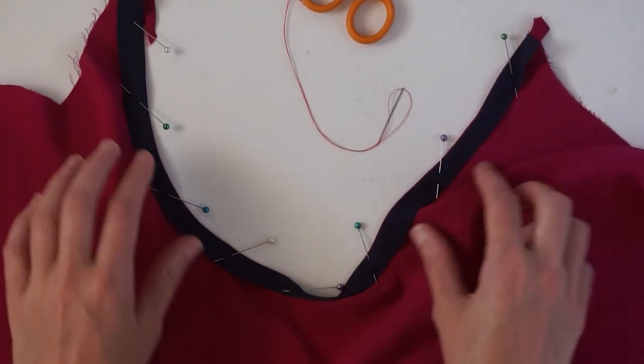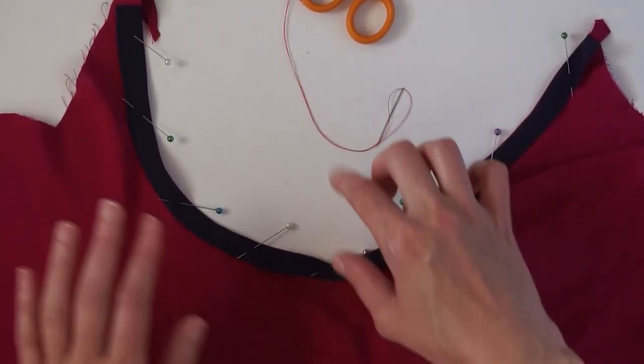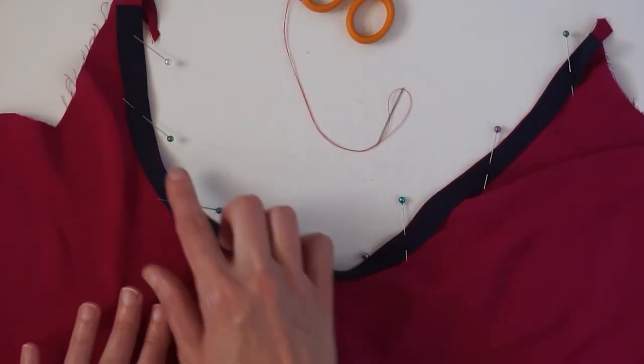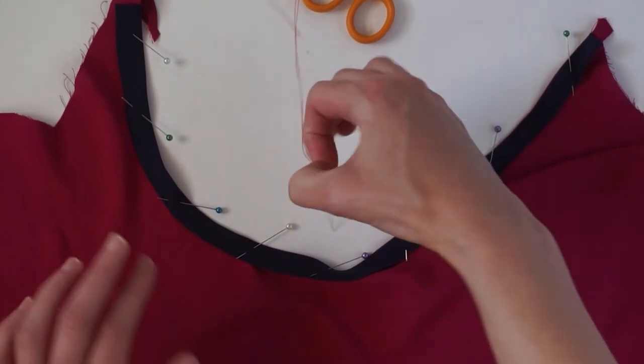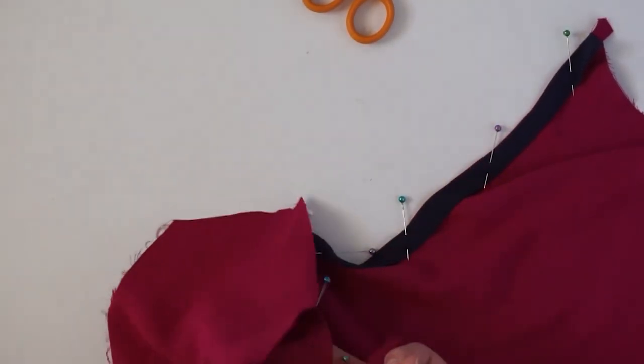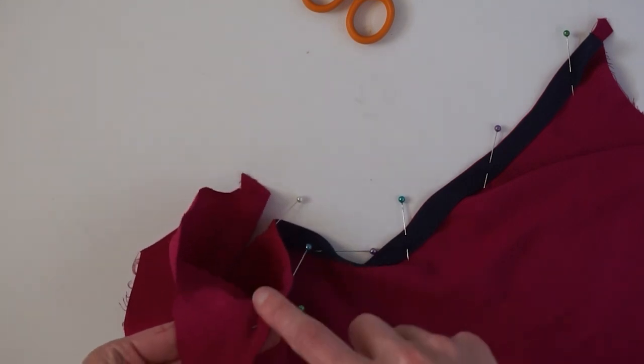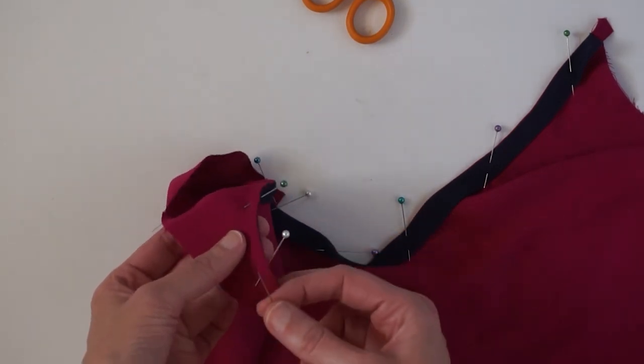So let's get started. Here I have a scrap of fabric, and in this example I'm pretending that this is a neckline and I'm doing a bias facing. You can use this hand stitch for a bias facing and you'll have basically no stitches visible on the outside of your garment, or it's really handy for a hem.